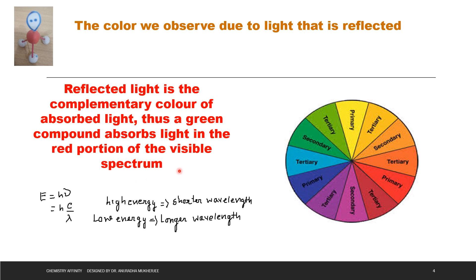The color we observe is due to the light which is reflected. This is called the color wheel. Green to purple is called the blue region which is high energy, and yellow to brown is red region which is the low energy.